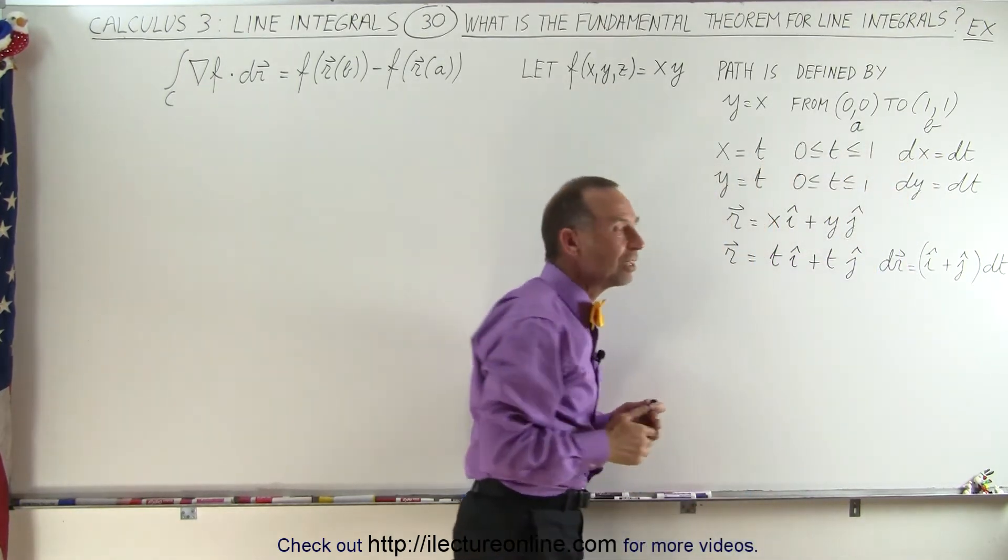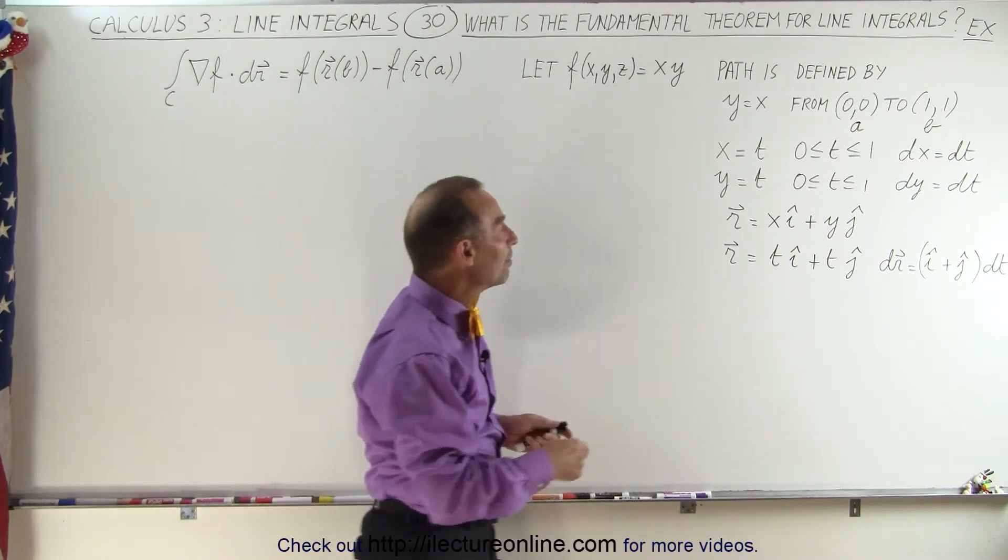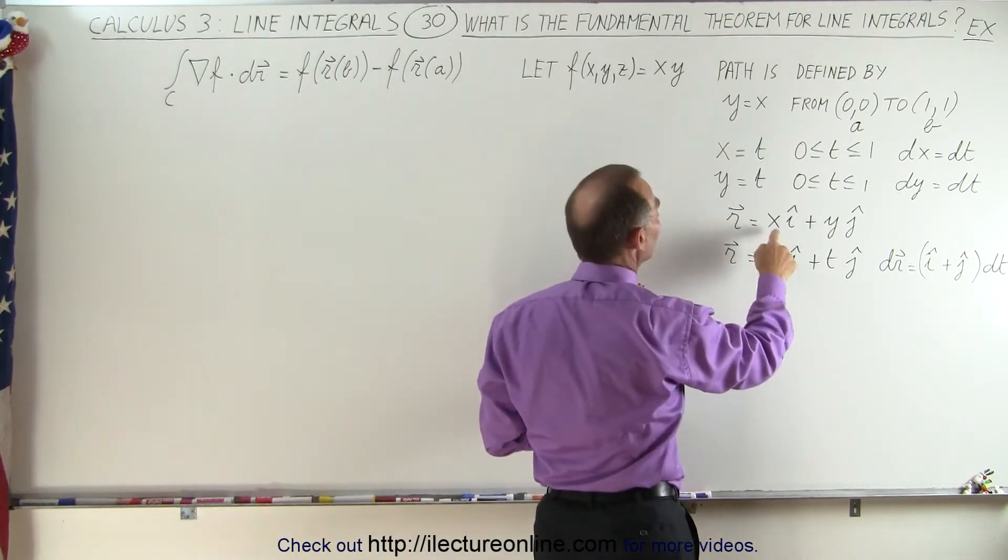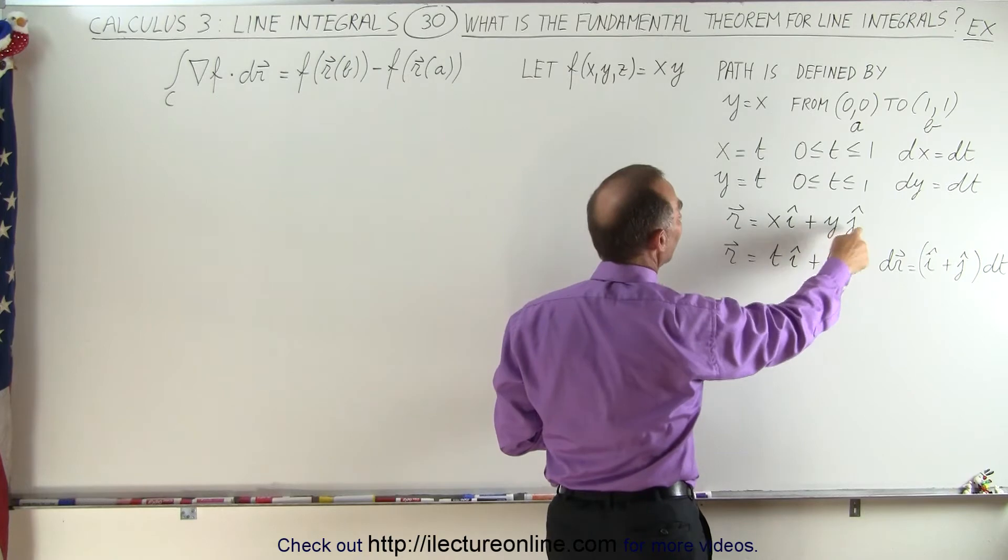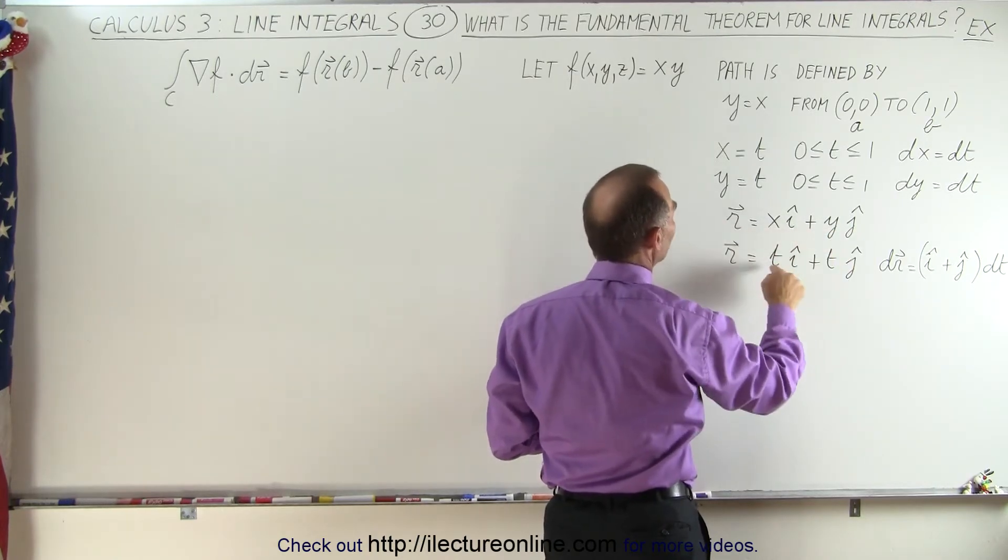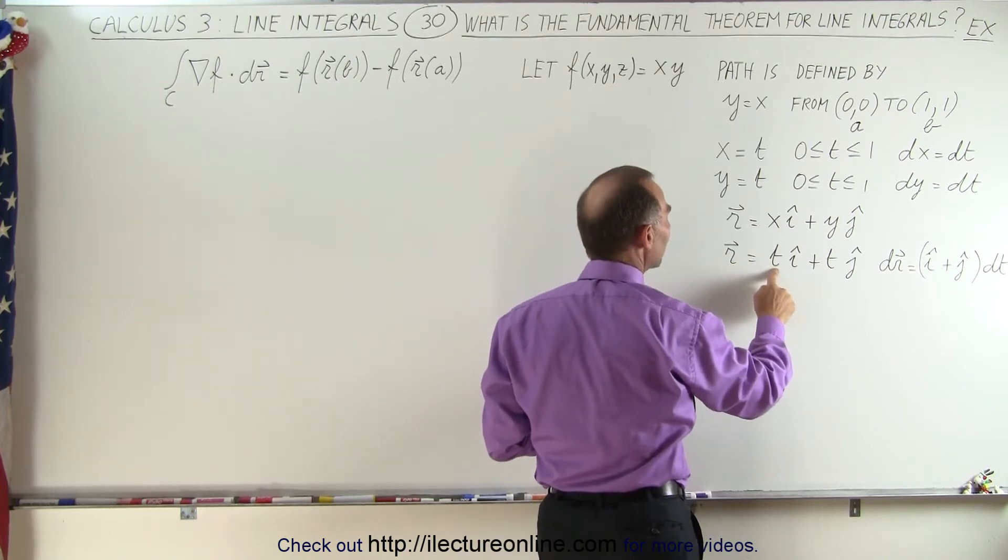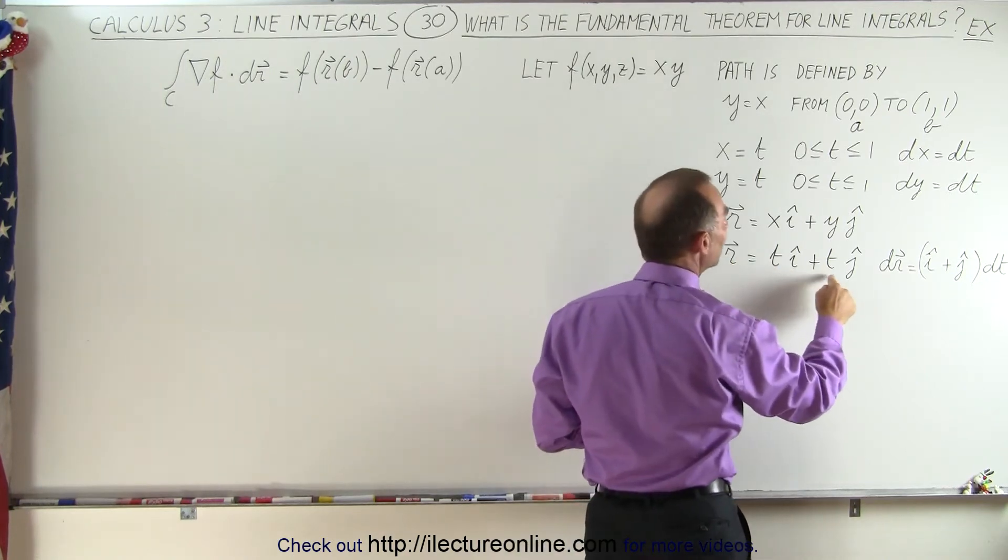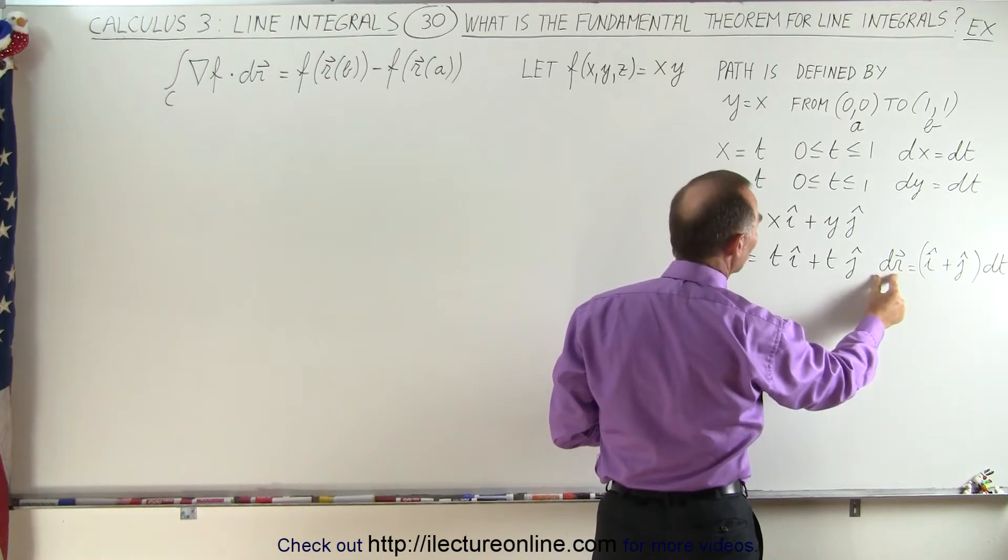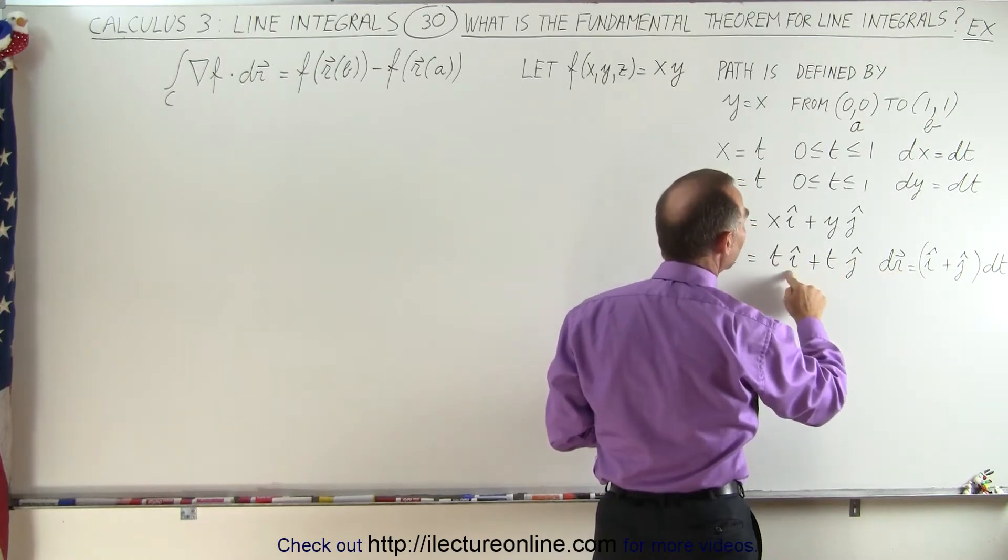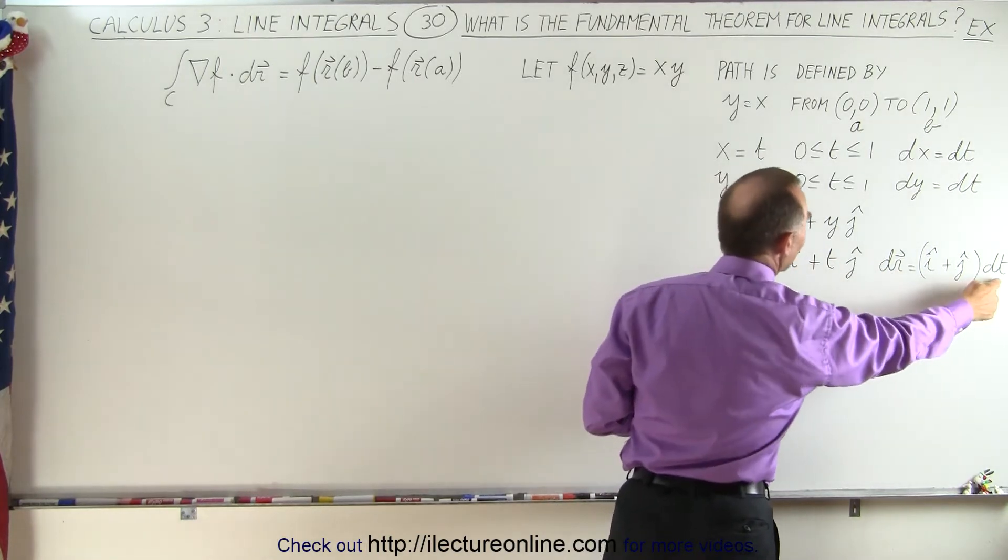Now the position vector is written as x times i plus y times j and since x and y are equal to t we could write the position vector in terms of the parametric variable t like ti plus tj and then the differential would be 1i plus 1j times dt.